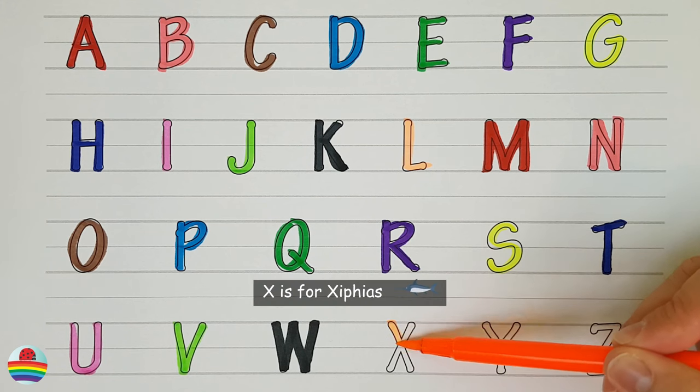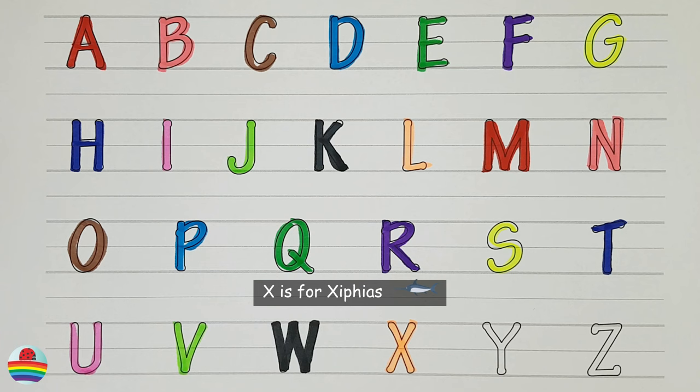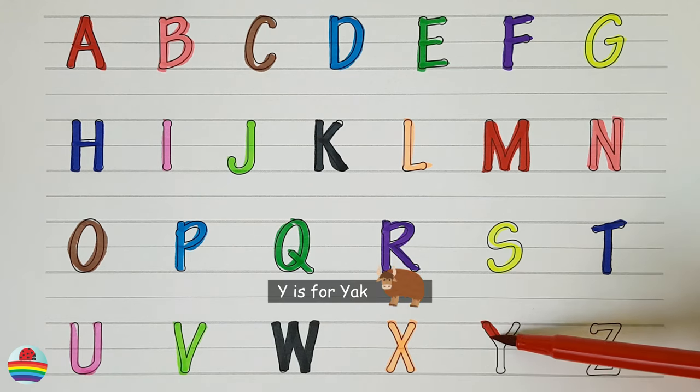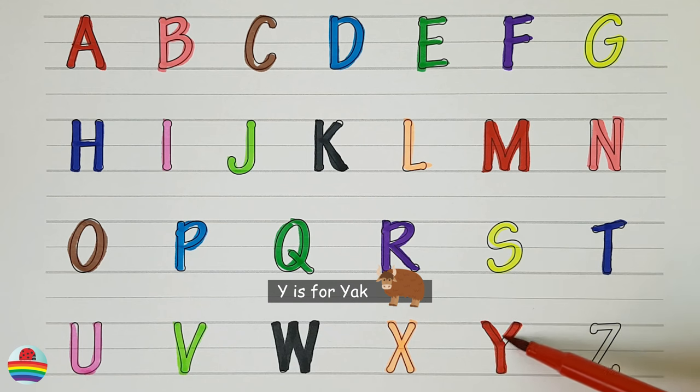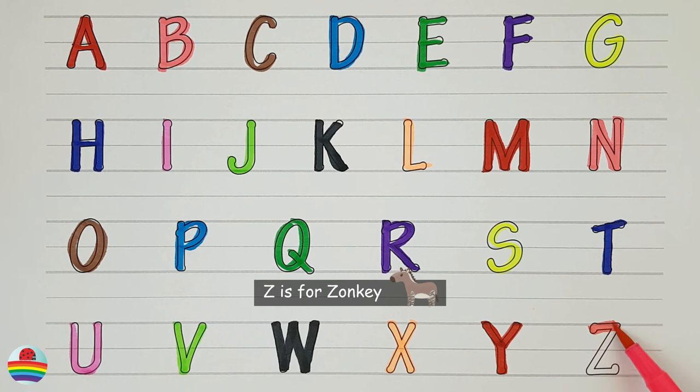X. X is for xiphias. X. Y. Y is for yak. Y. Z. Z is for zonkey. Z.